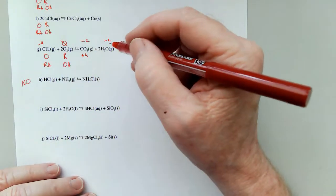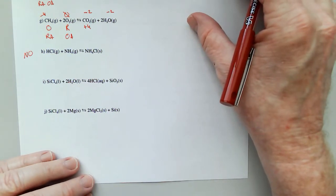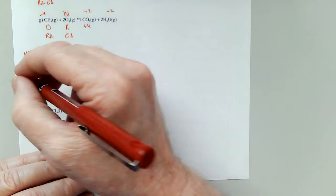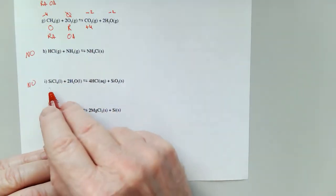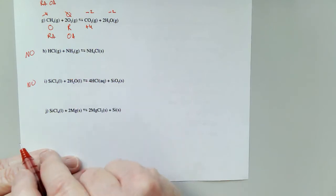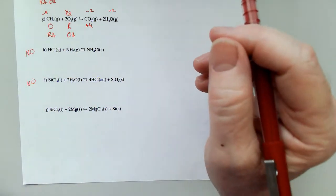Another tough one here in H. No redox, sorry. The oxidation number is just the same all the way across. And actually, that's going to be true here in I also. It's not a redox. Plus four and plus four for the silicons. Minus one, minus one for the chlorines. Nothing's changing.